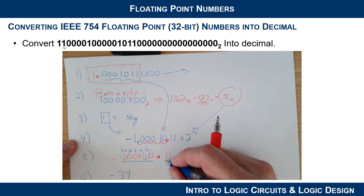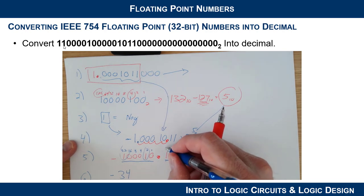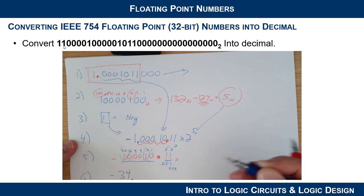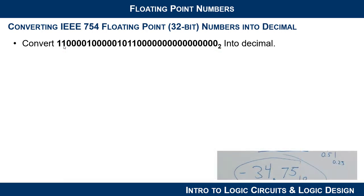Bring that negative down. And then this right here has a weight of 2 to the negative 1, 2 to the negative 2. So this is a half, and this is a fourth. So this is 0.5, and this is 0.25. So the answer then becomes this is 0.75 in decimal. And that is our number. So that's our decimal number that we extracted from this 32-bit field.